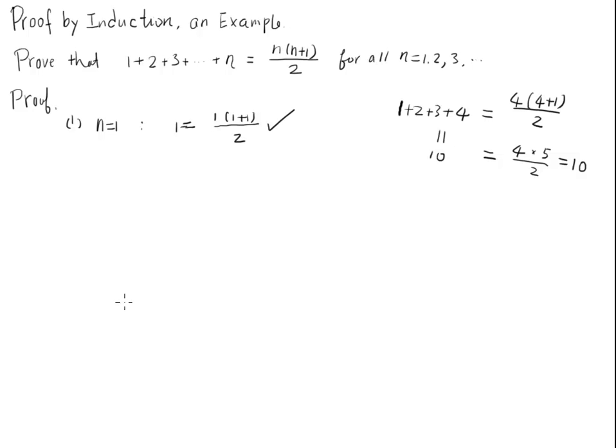That's the starting point. And then the second step, we make a so-called inductive assumption. We are going to assume the formula holds for n minus 1. Now what it means is that we are imagining that we have proven this formula for all n minus 1 cases.